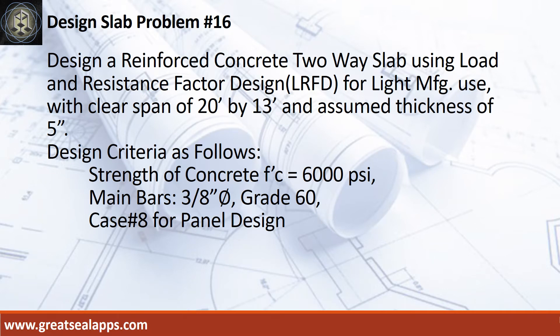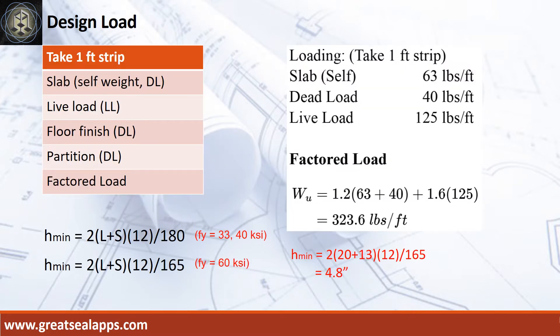Design a Reinforced Concrete two-way slab using Load and Resistance Factor Design for light manufacturing use, with a clear span of 20 feet by 13 feet and assumed thickness of 5 inches. Design criteria: strength of concrete 6,000 PSI, main bars 3/8-inch diameter Grade 60, Case Number 8 for panel design. Given uniform load for 5-inch thick slab is 63 PSF, light manufacturing live load is 125 PSF, other dead load (floor finish and partition) is 40 PSF, for a total factored load of 323.6 PSF.